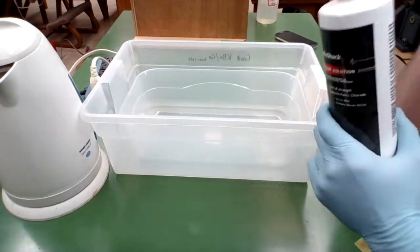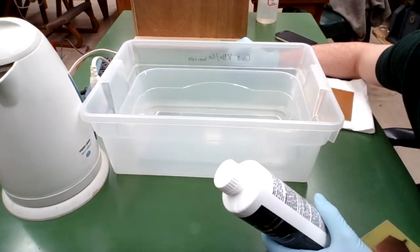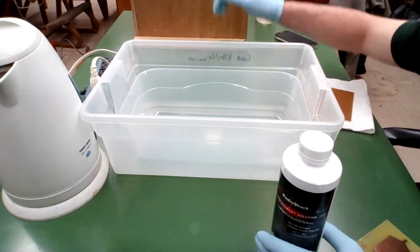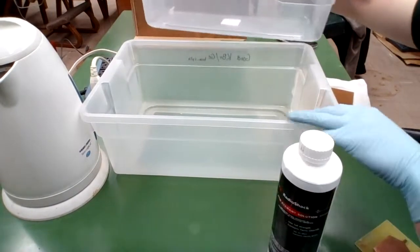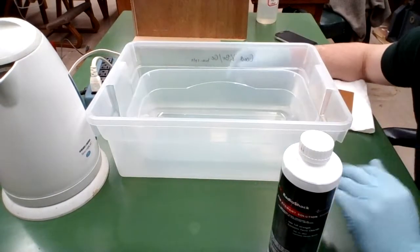The directions call for the etchant solution to be poured into a tub to a depth of one quarter inch. And so what I have here is my tub that I'm going to pour my etchant into, sitting in a larger tub that I'm going to pour hot water into that I have heating over here.